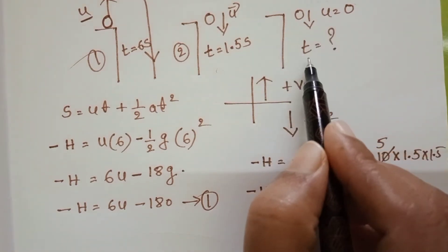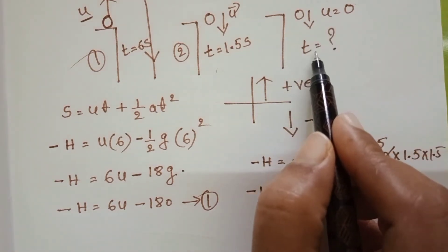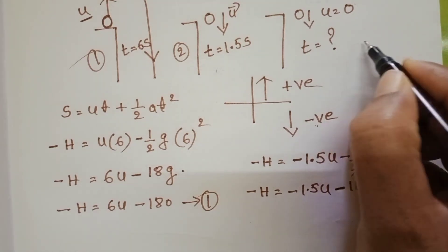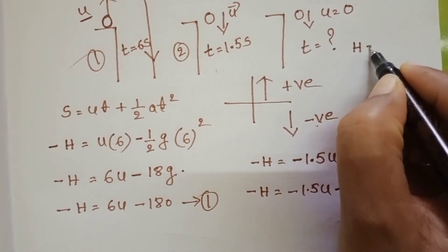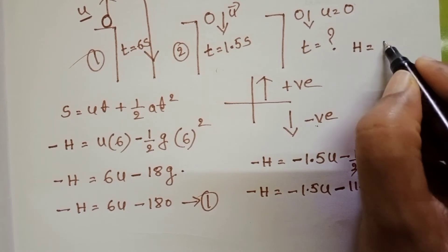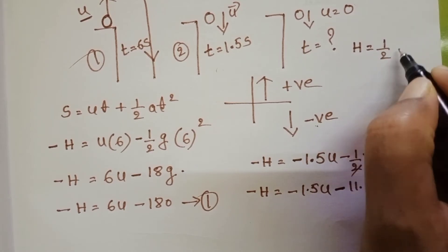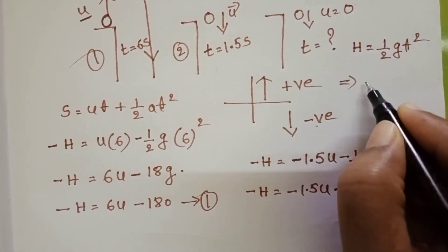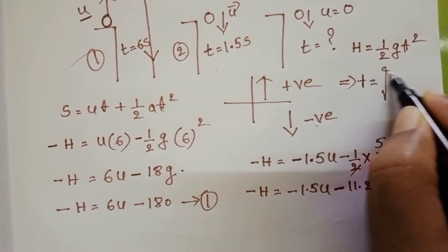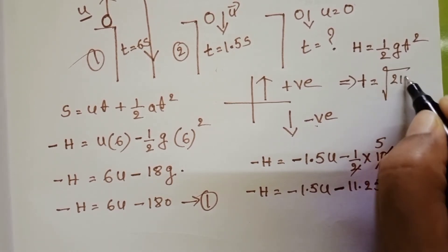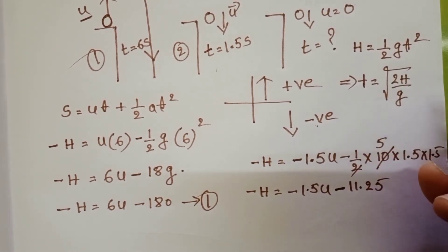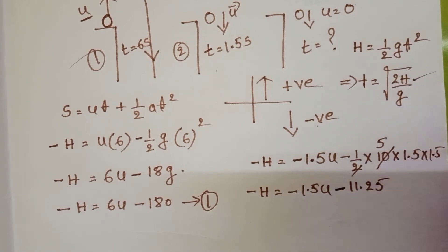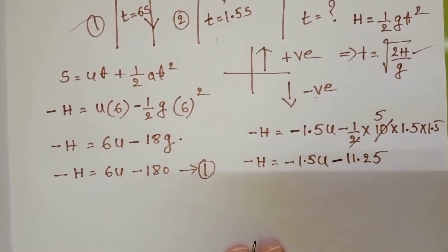For the third ball, we need to find the time. The initial velocity is zero, so the UT term vanishes. The equation simplifies to H = ½GT², giving T = √(2H/G). To find the time, we first need to determine the height H.